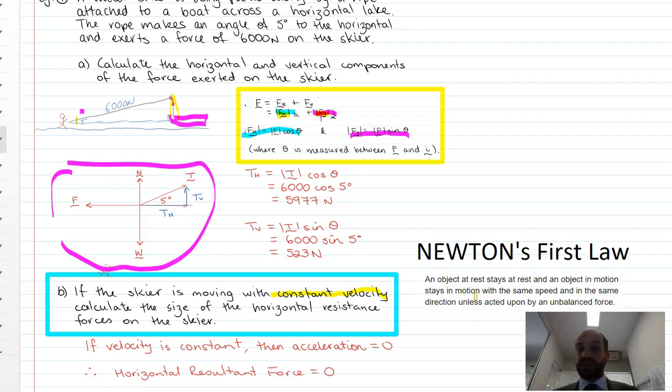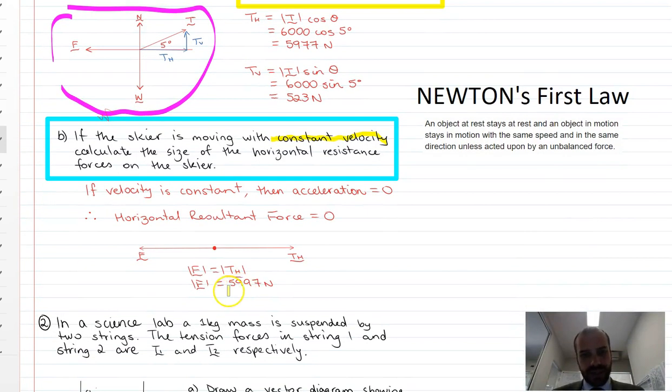Objects like doing what they're doing. So if the skier is moving with a constant velocity, calculate the size of the horizontal resistance. Well, if there's 5977 newtons in the horizontal, then we can say that there's resistance of 5977 newtons in the horizontal as well, because he's traveling at a constant velocity. That thrust in the horizontal is going to be equal to that friction in the horizontal.